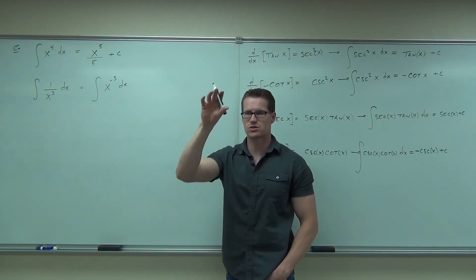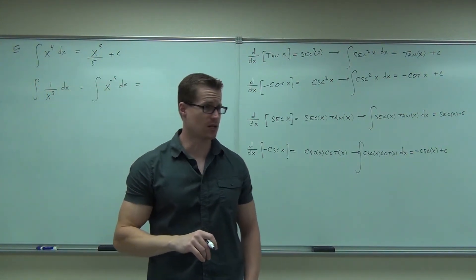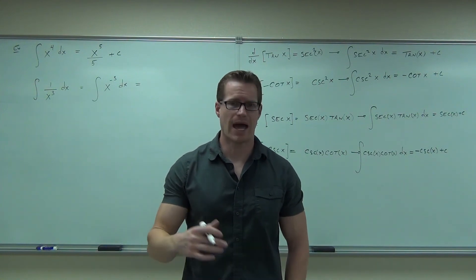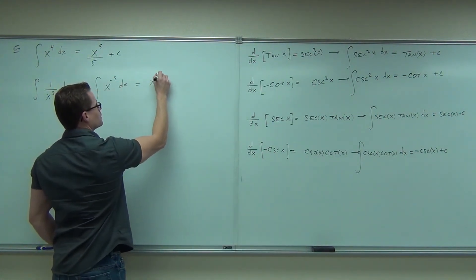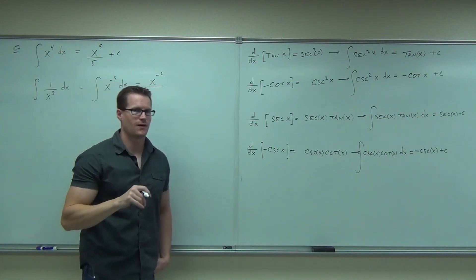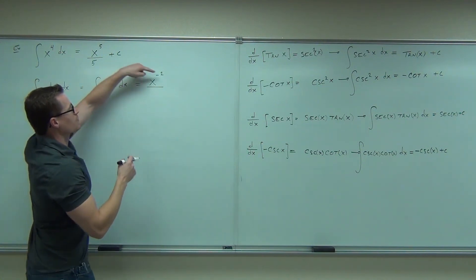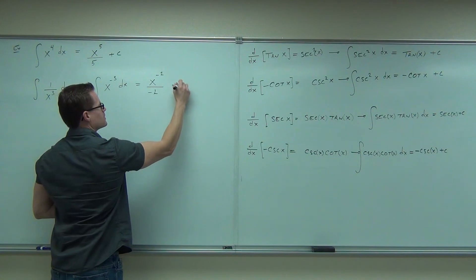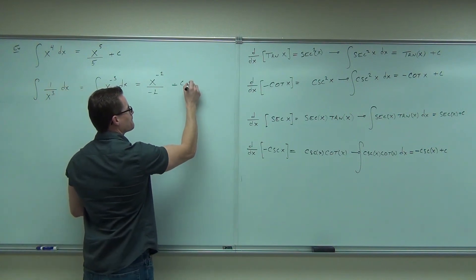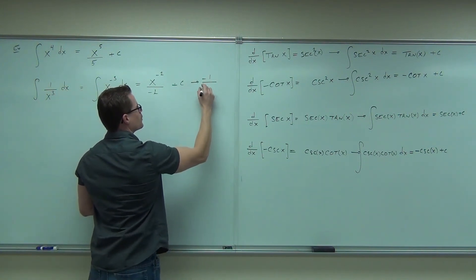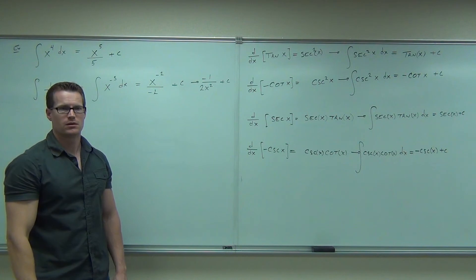Just be careful when I say add, I do mean add. I don't mean get x to the negative 4, because that would be subtracting, right? If we're adding to that, you're going to get x to the negative 2, very good. Over what? Negative 2. Over negative 2. That's what you're going to get. Yes, of course, because you take it over your new exponent. Negative 2 plus c. You might make this a little bit prettier. You can do negative 1 half. You can do negative 1 over 2x squared plus c, which is probably the most appropriate way to write that.